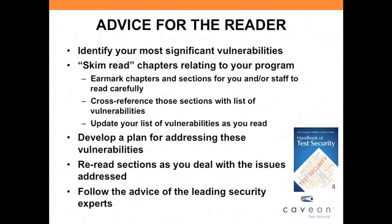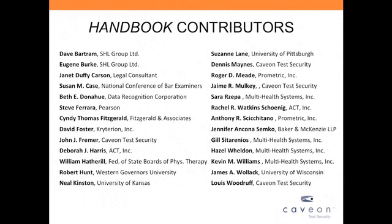When you're done and you have this nice cross-referenced list, I recommend you develop a plan for addressing these vulnerabilities. There's simply no way you're going to be able to do all of them at once — it takes a lot of time to make your tests secure. Identify what your biggest vulnerabilities are and where you want to devote your energies, at least initially. Then go back and reread those sections that relate most specifically to those vulnerabilities and follow the advice — begin to implement the good material discussed in this handbook. The contributing authors listed here really are the leaders in the field, experts in the specific topic on which they wrote their chapter.